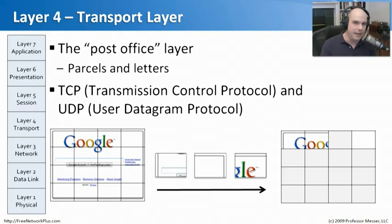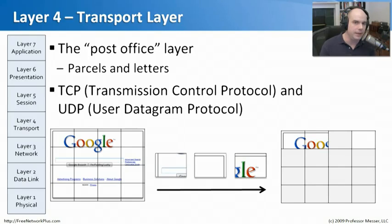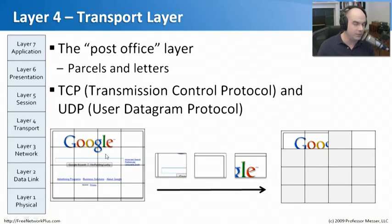Very often the data we need to get across the network is a large amount that won't fit into a single frame. So TCP and UDP take those chunks of data, split them into smaller pieces, and send them across the network. For instance, a web page from Google doesn't come back as a single frame — there are multiple frames transmitted via TCP that end up on the other side, put back together so that when you finally receive everything on your screen, it looks exactly as when it started.